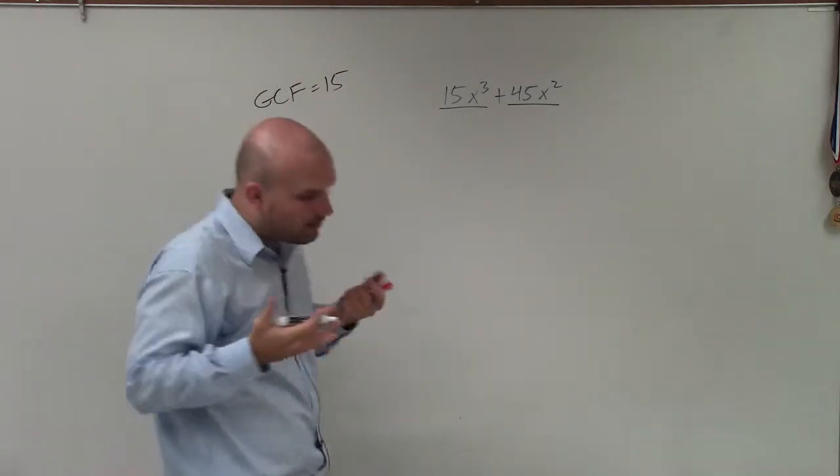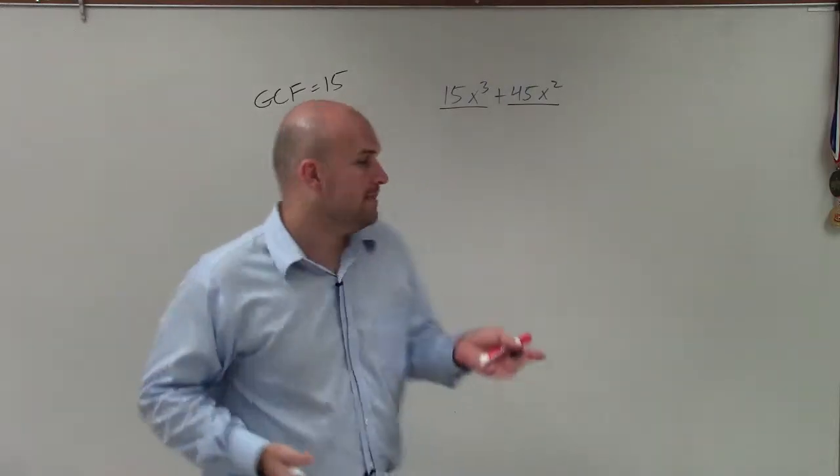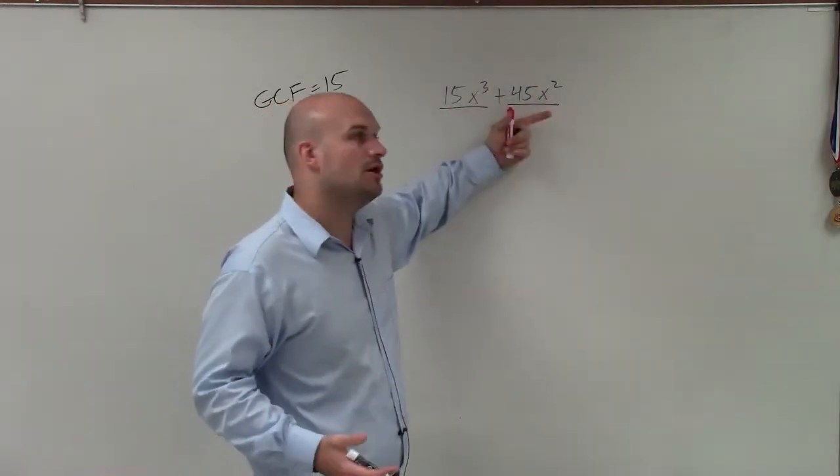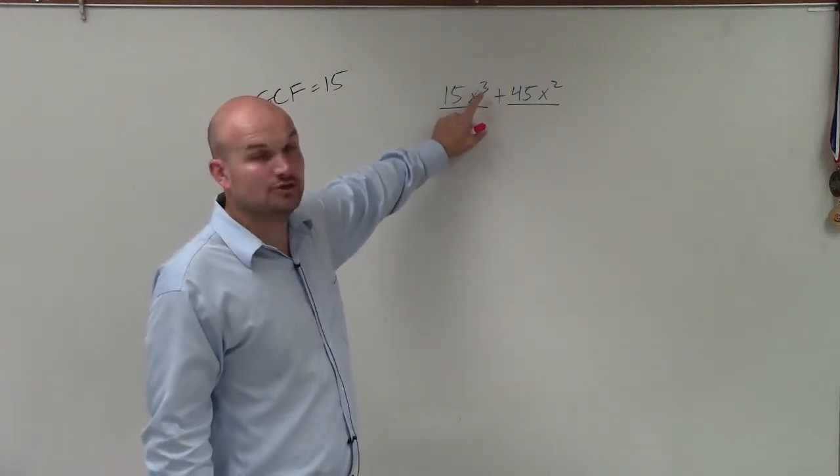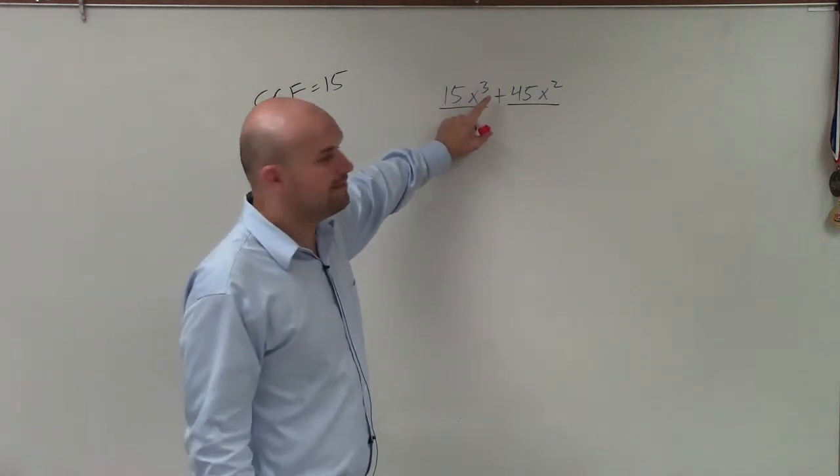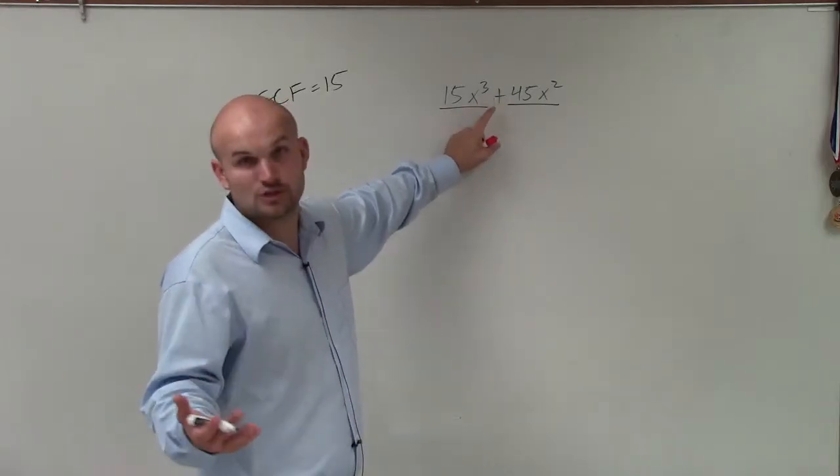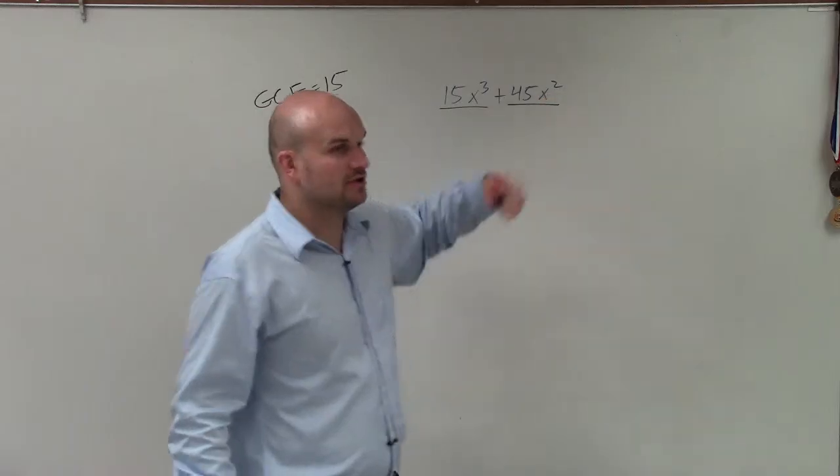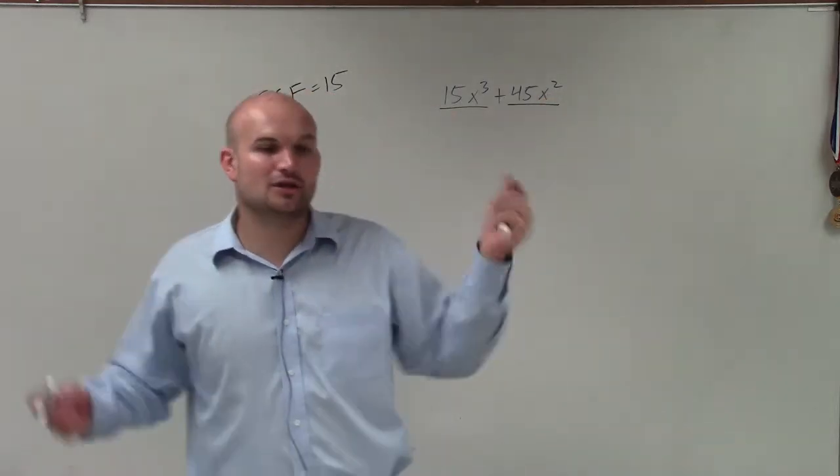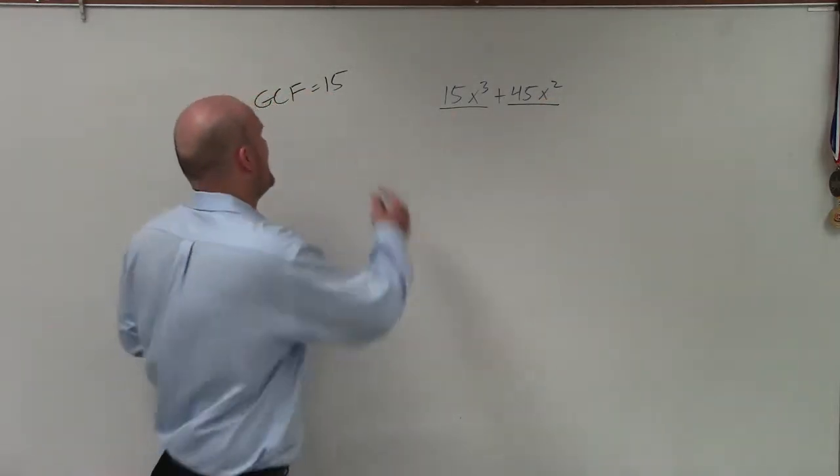And then I got to say, all right, well, what is the largest variable, then, that evenly divides into x cubed and x squared? Well, the largest variable that divides into x cubed is x cubed, right? But also, what are some other factors? x squared divides into it, as well as x. For x squared, though, it's only x squared and x. So the largest between the two is x squared.